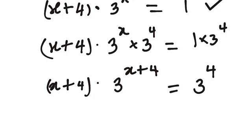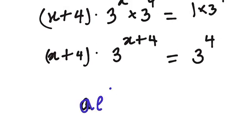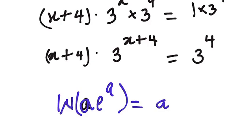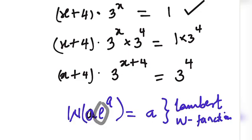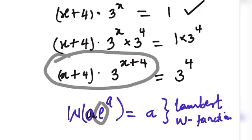So we can see that we have achieved our goal by making the power of 3 to be x plus 4. Now, the next thing we're going to apply is a function called the Lambert W function, where you have a times e to the power of a, and applying this Lambert W function gives us a. So there is an introduction of e here, and we want to bring out something like e in this place too, so we are going to manipulate and see how we can do that.